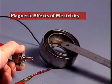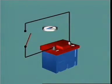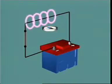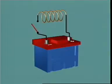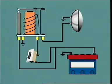This section examines magnetic effects of electric current. When current passes through a conductor, a magnetic field is created around it. When wire is wound into a coil, it produces a much stronger magnetic field.